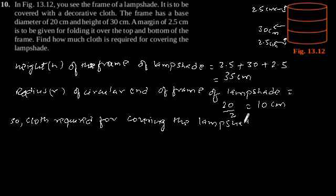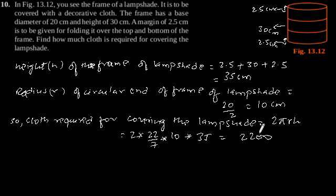Putting the value of r and h we will get 2 into 22 by 7 into r is 10 and h is 35 which is equal to 2200 cm squared. So for covering the lampshade 2200 cm squared cloth will be required.